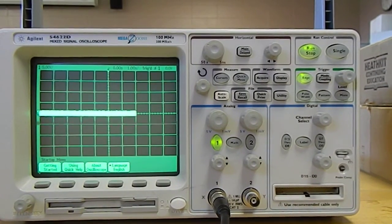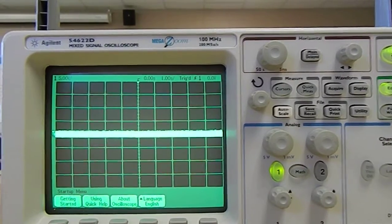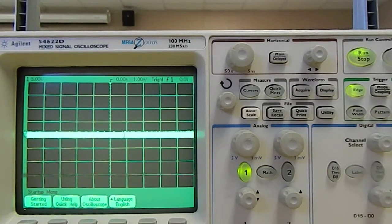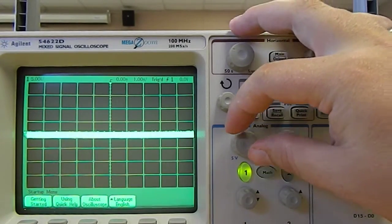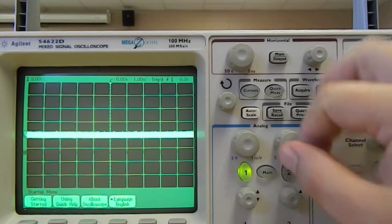Okay, so in order to zoom in on the signal and actually see this in a way that makes any sense, I need to change both the vertical and the horizontal scale. Now, the way to change the vertical scale is located within this part that says analog. And it's actually this big knob, which says 5 volts to 1 millivolts.